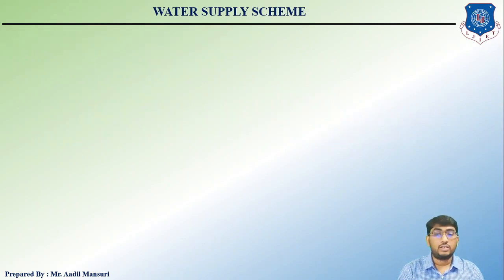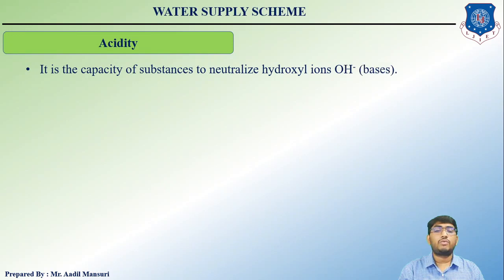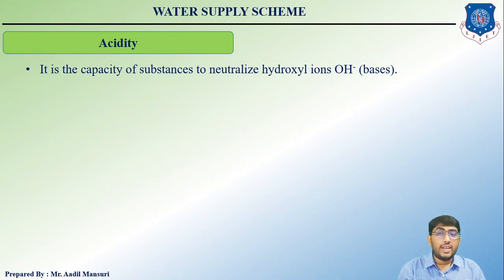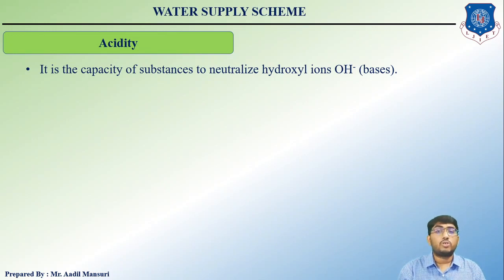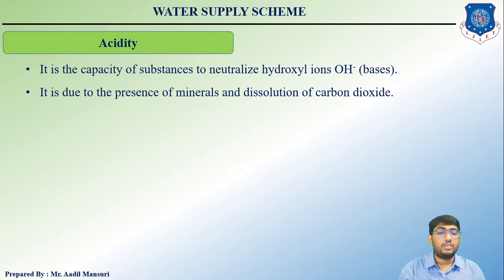Let us talk about acidity. Acidity is the capacity of substances to neutralize hydroxyl ions (OH⁻), that is, a base. In water there are H⁺ and OH⁻ ions. If the solution is basic it has more OH⁻ ions, and the capacity to neutralize those OH⁻ ions comes from H⁺ ions. That capacity is known as acidity. It is due to the presence of minerals and the dissolution of carbon dioxide.